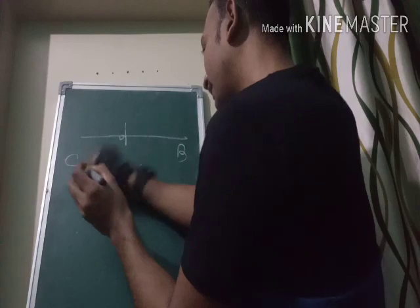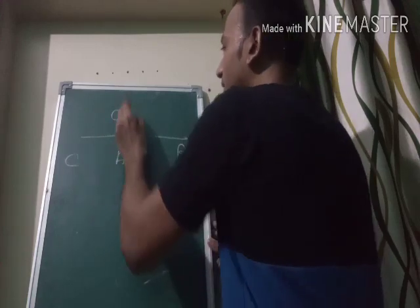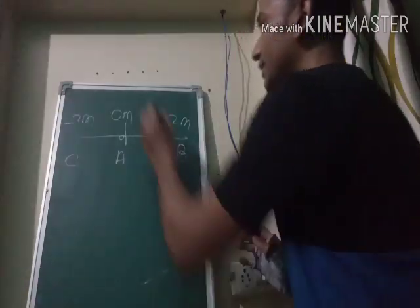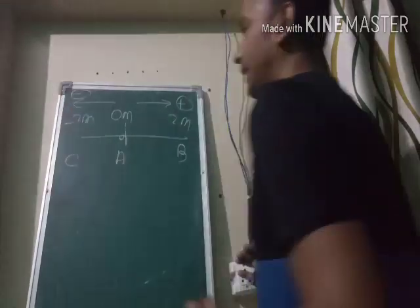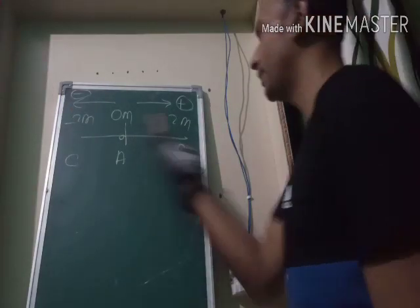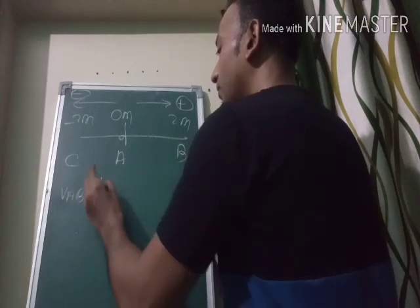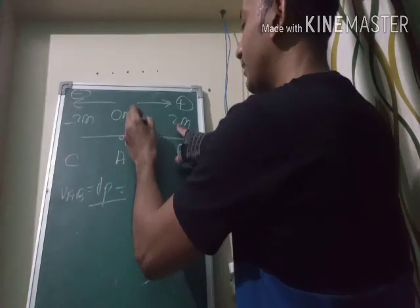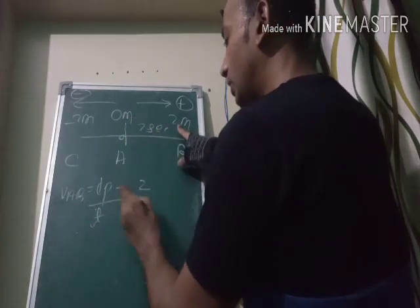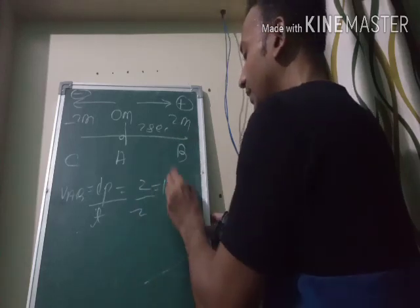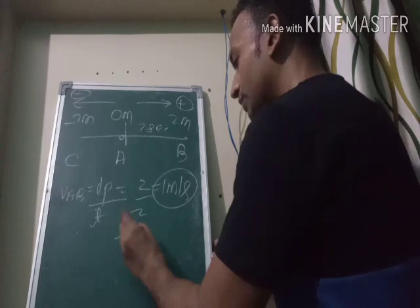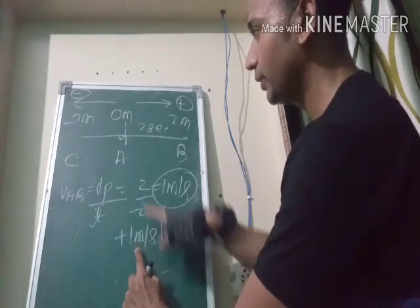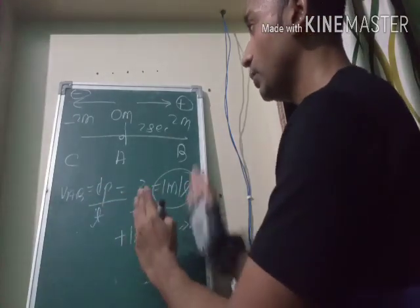Let me explain with an example. Suppose we have three points A, B, and C. From zero, B is at two meters and C is at minus two meters — so the positive direction is toward B and the negative direction is toward C. Moving from A to B, the displacement is two meters. With a time of two seconds, velocity equals displacement over time: two meters divided by two seconds gives positive one meter per second. This magnitude and direction together describe the velocity.